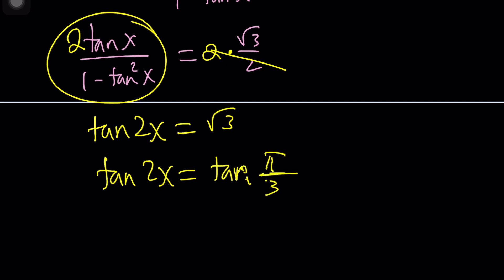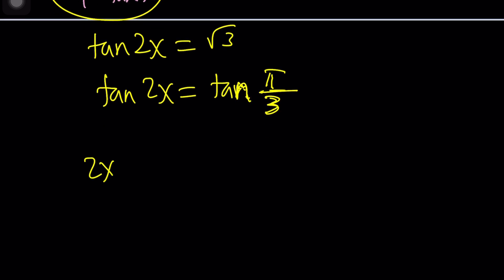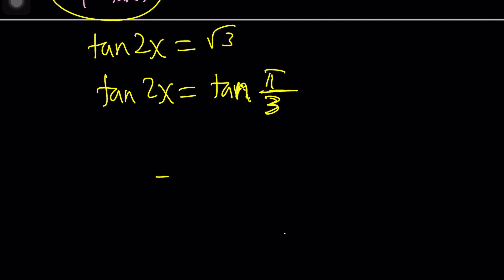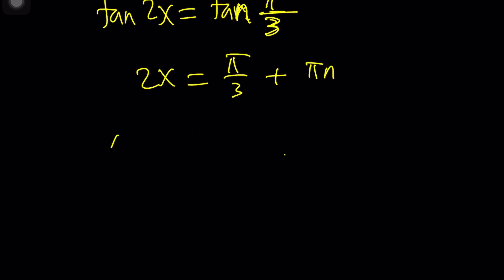And then from here you can basically write the solutions as 2x equals pi over 3. Some pen acting up. Sometimes I touch the metal and it solves the problem but it doesn't always solve the problem. I'm gonna give it a quick try. Allow me to finish this up real quick. Just bear with me. 2x equals pi over 3 plus pi n. But then we're gonna divide both sides by 2.